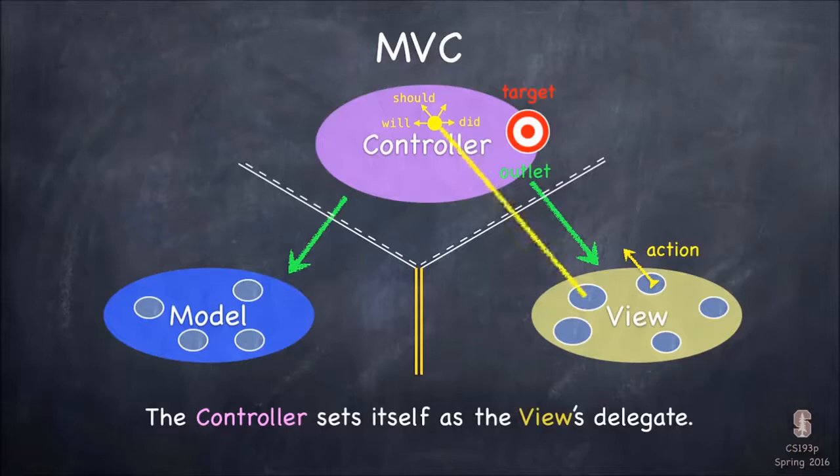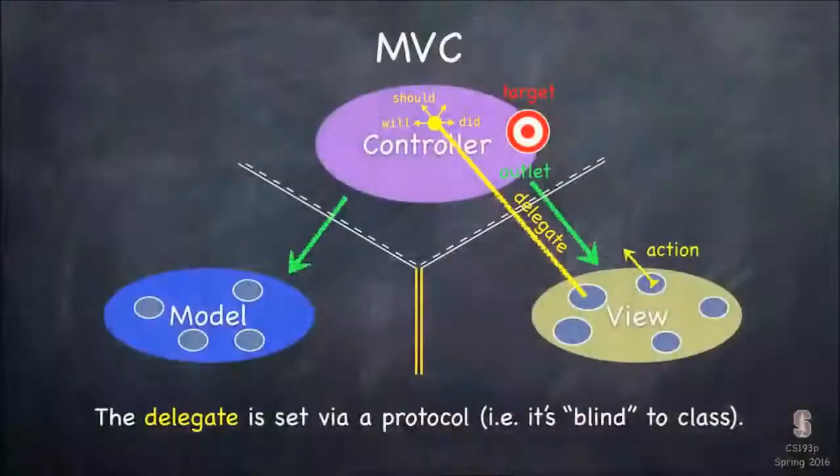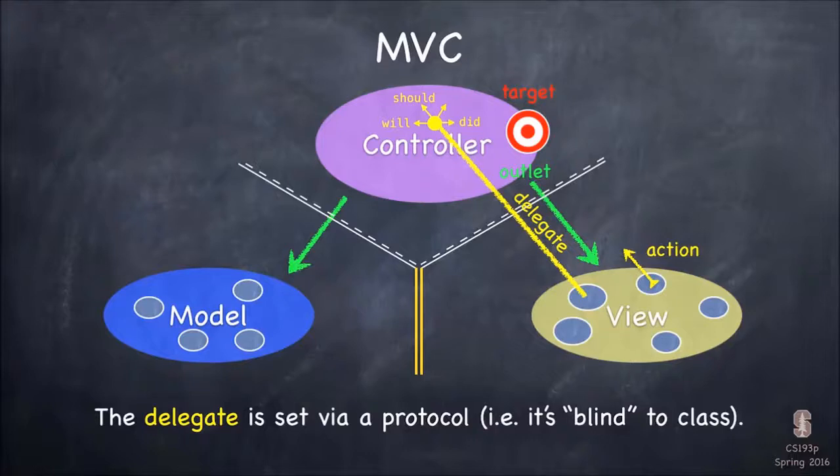So this is done via what's called a delegate. And we're gonna talk about delegation next week. And the word delegate is appropriate here because essentially the views minions are delegating some responsibility to the controller. The way this is implemented is very simple. Delegate, the delegate is just a property in the view. And that property, you might ask, what's the class of that property because, you know, the view doesn't know anything about the calculator view controller. And the answer is, it's not gonna be a class. It's going to be what's called a protocol.